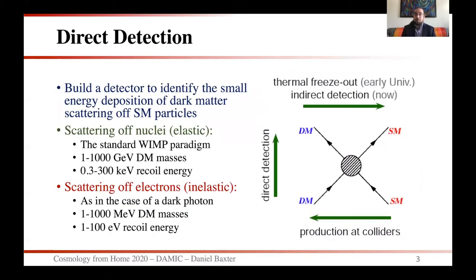When I talk about dark matter, I'm specifically going to be talking from the subfield of direct detection. Before I define that, I want to define what it isn't. You've probably heard of dark matter searches at the LHC, where at a collider they slam two standard model particles at very high energy into each other and try to produce dark matter particles. Alternatively, at this conference you'll be hearing about indirect detection — looking for dark matter annihilating or decaying into standard model particles. What I'm going to be talking about is direct detection, wherein we build a detector to identify the small energy deposition of dark matter scattering off of standard model particles.